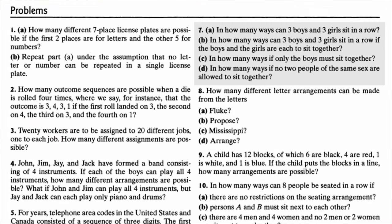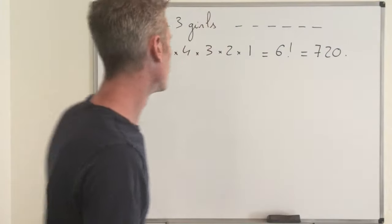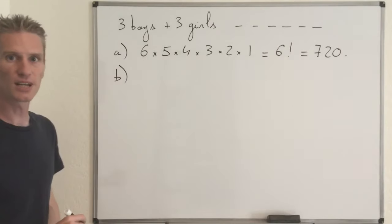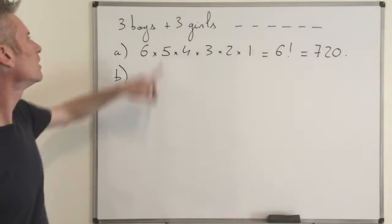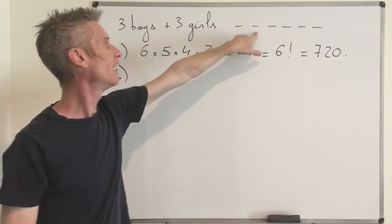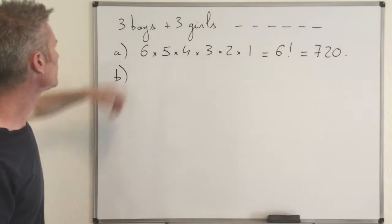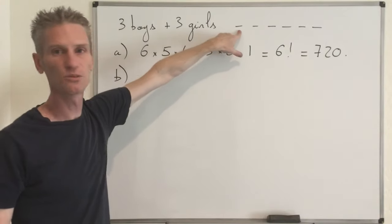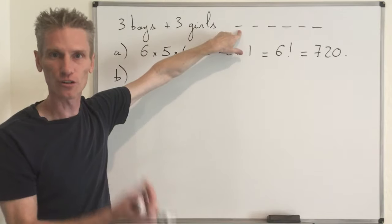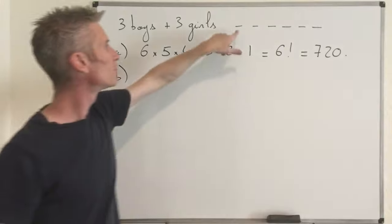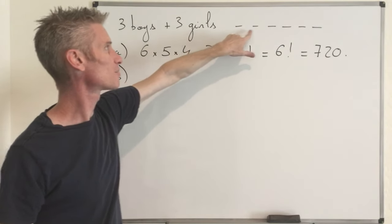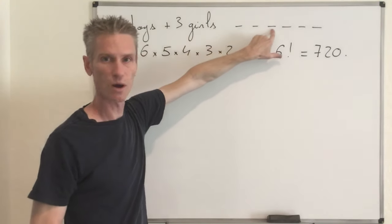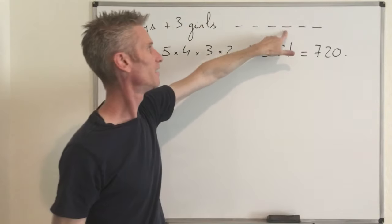Going back to the slide: the second question is the same, but now we have one restriction, which is that the three boys must be together and the three girls must be together. One possible way to proceed is exactly like we did to find 6!, proceeding sequentially. Because you have six individuals you can start with one of the six, then if you chose a boy at the first place you need again a boy for the second seat. So that would give you 6 × 2 × 1, and then you start with the other group: 3, 2, 1.